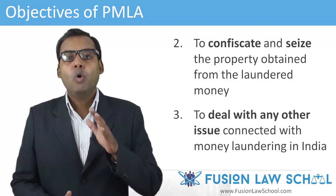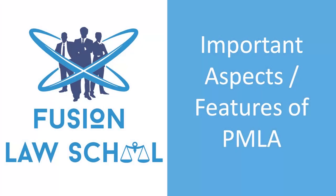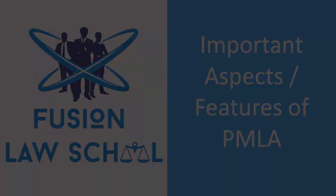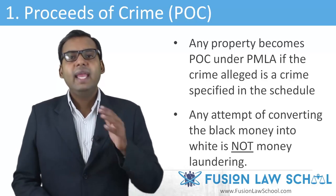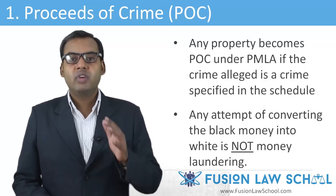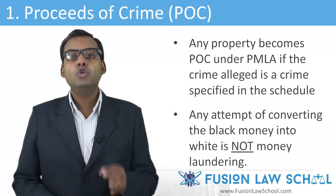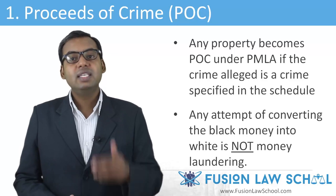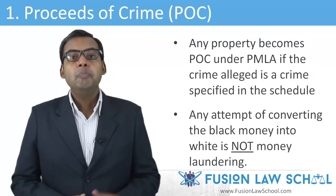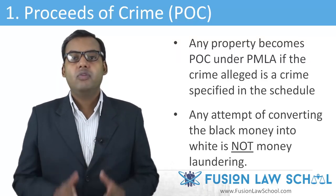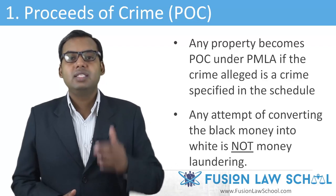Now let's discuss some important aspects or features of PMLA. The first feature is proceeds of crime. Any property becomes proceeds of crime under PMLA if the crime alleged is a crime specified in the schedule to PMLA. If an offense is a crime under a particular law which is not listed in the schedule, then the gains of that offense are not proceeds of crime — they are not dirty money as far as PMLA is concerned.